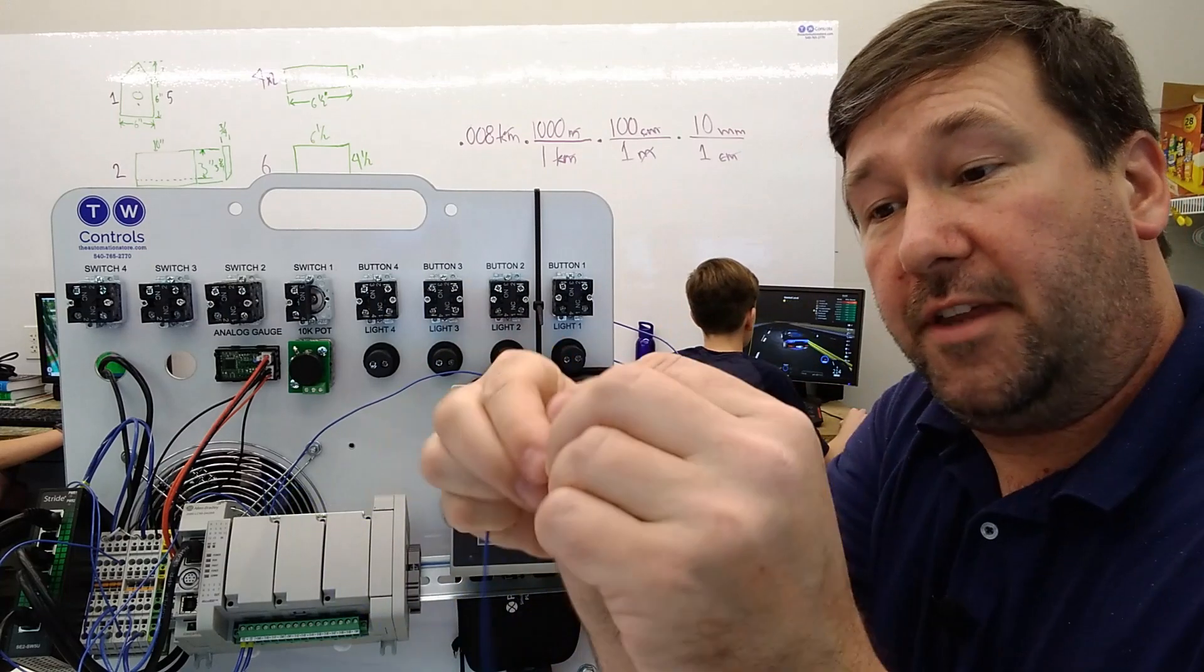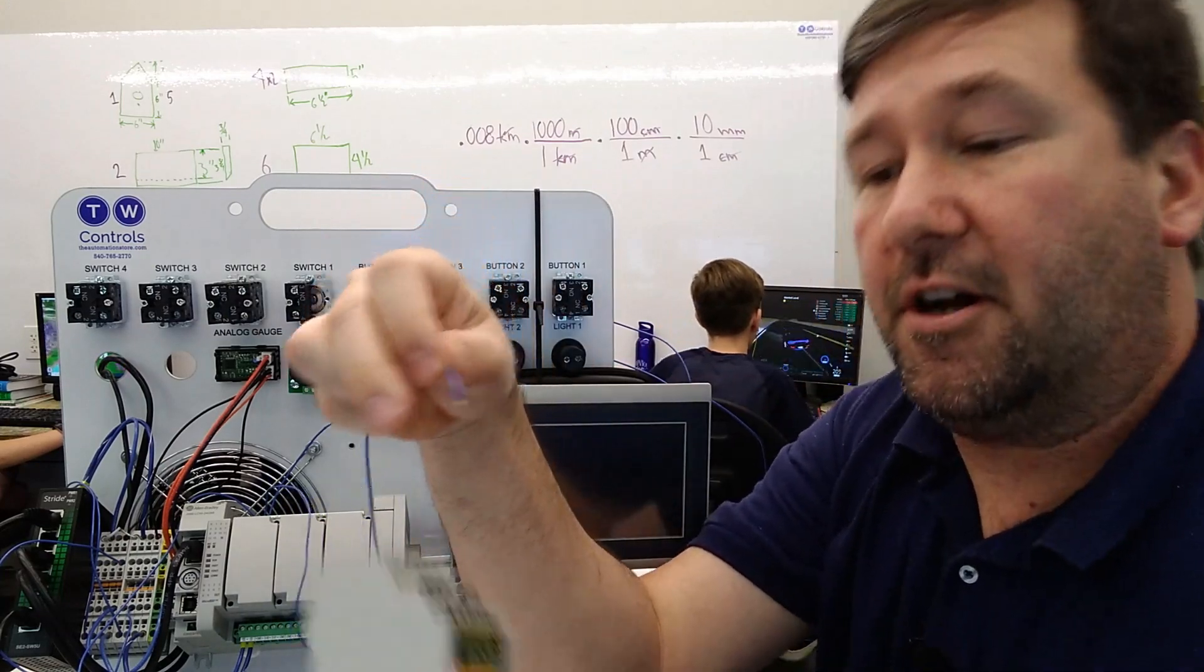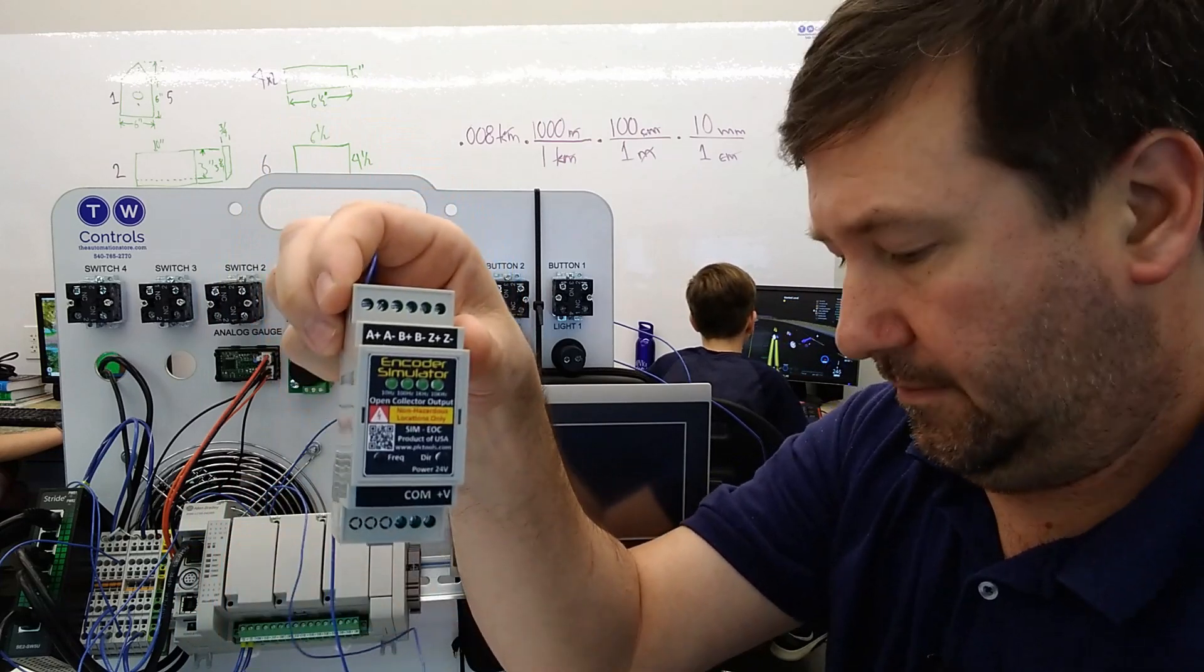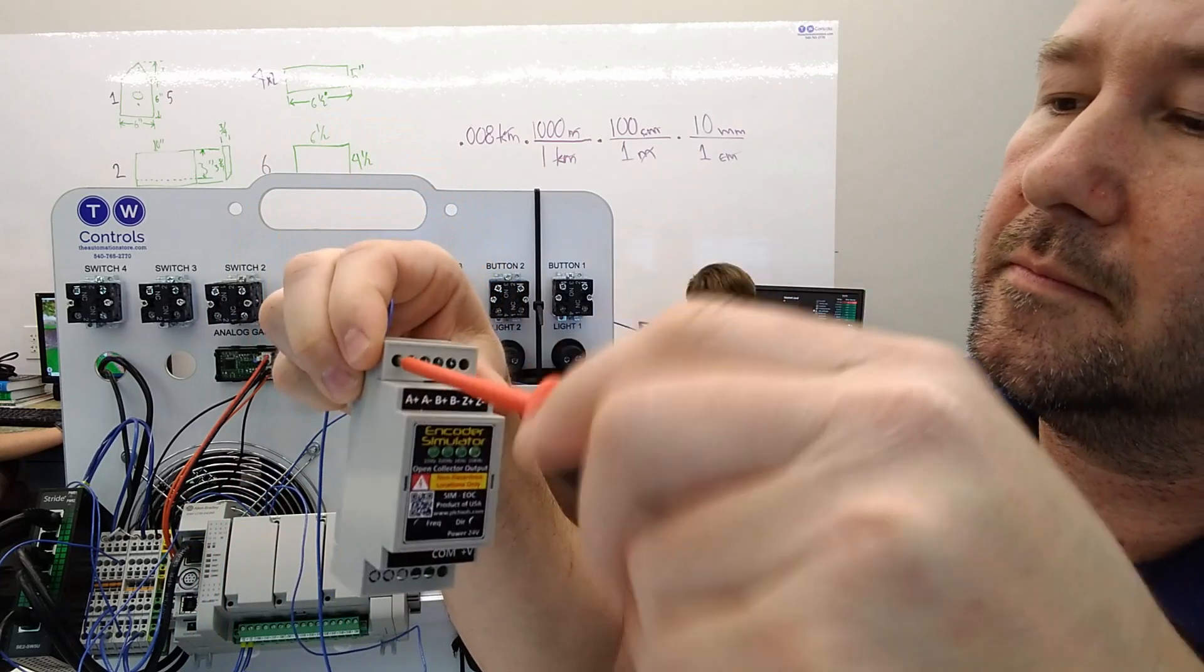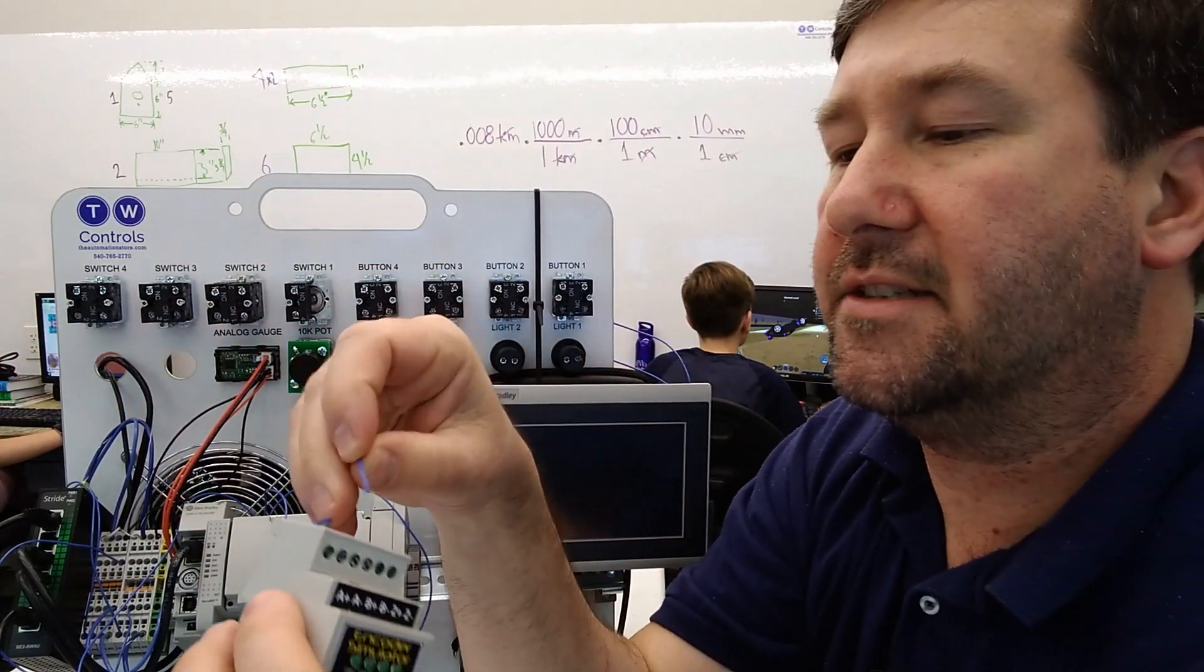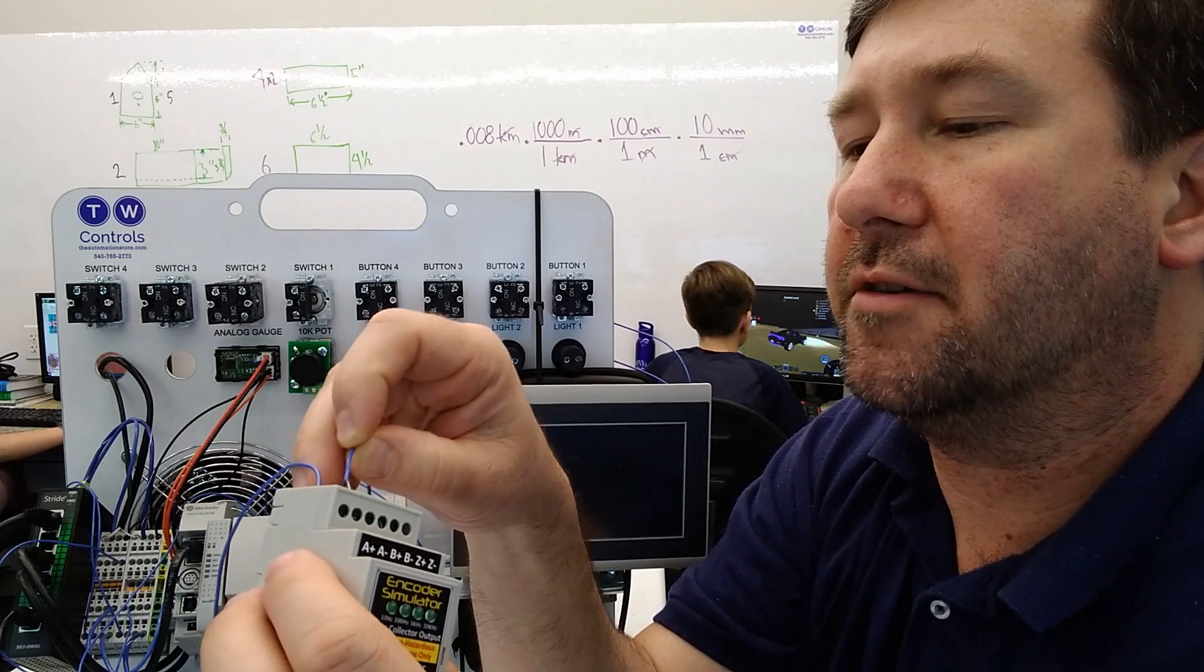Then we'll take the wire that is connected to input 0, and we're going to put it to the A plus of our encoder simulator. And we'll take input 1 and connect it to the B plus of our encoder simulator.